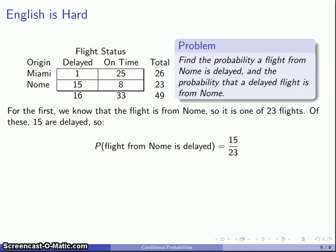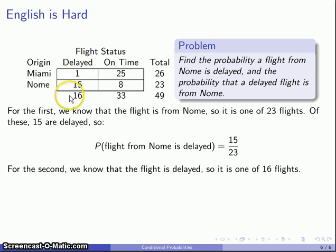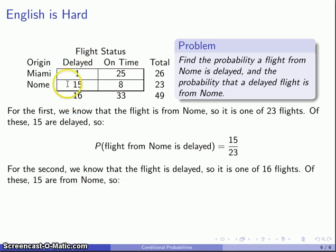Now consider the second probability: the probability that a delayed flight is from Nome. Reading the sentence carefully, what we know here is that the flight was delayed. So we're looking at all 16 delayed flights, and the question is whether the flight was from Nome. Of those 16 flights, 15 were from Nome, so our probability is 15 out of 16. This contrasts sharply with the 15 out of 23 from before, illustrating how the language determines which event is the given condition.